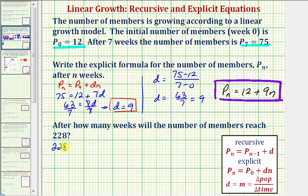So we'd have 228 = 12 + 9n. Now we solve for n. We subtract 12 on both sides, that gives us 216 = 9n. Dividing both sides by 9, n = 216/9 = 24.